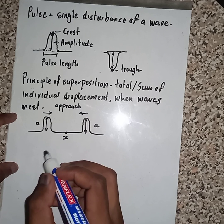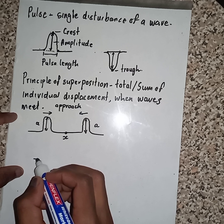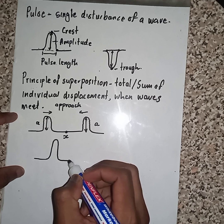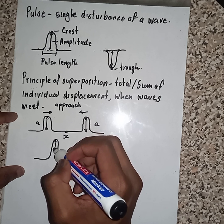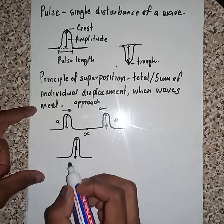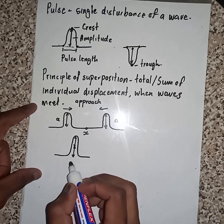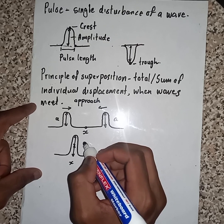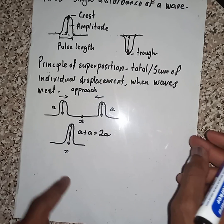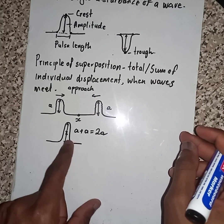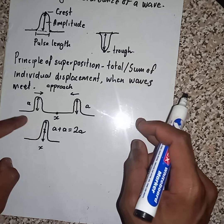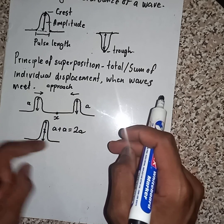They will overlap, forming a larger wave. At point X we are going to get the situation whereby A plus A equals 2A. When we add these two waves they form a larger wave, which is 2A.